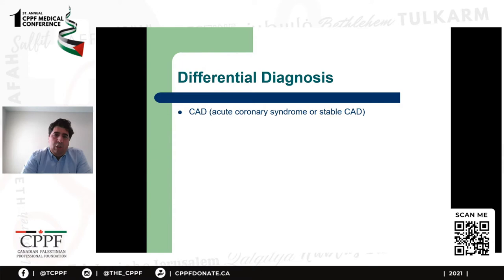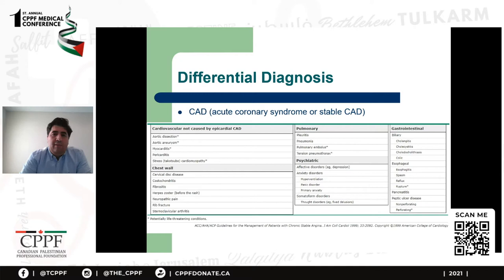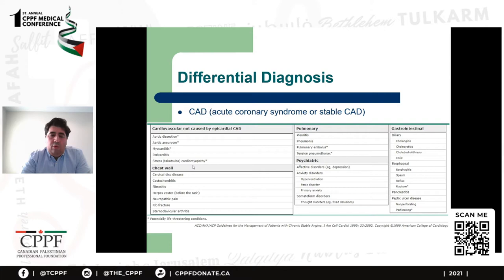Beside coronary artery disease, there are many other causes of chest pain. There are other cardiovascular causes, including aortic aneurysms and dissection, myopericarditis, and stress-induced cardiomyopathy — though stress-induced cardiomyopathy usually presents as non-STEMI or STEMI and is a diagnosis of exclusion made at catheterization. There are chest wall causes, mainly musculoskeletal, like costochondritis, rib fracture, and herpes zoster. There are pulmonary causes like pleuritis and pneumonia, but more importantly pulmonary embolism and tension pneumothorax, which can be life-threatening.